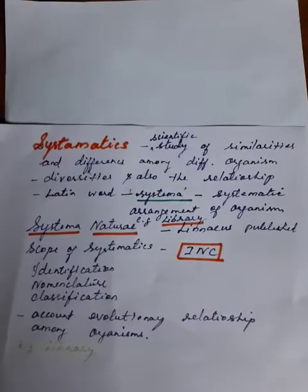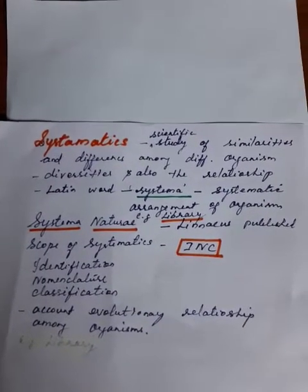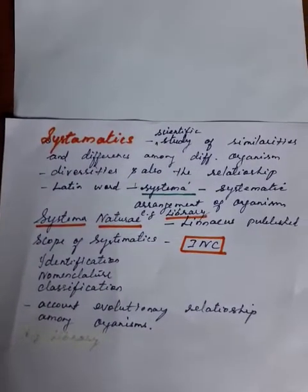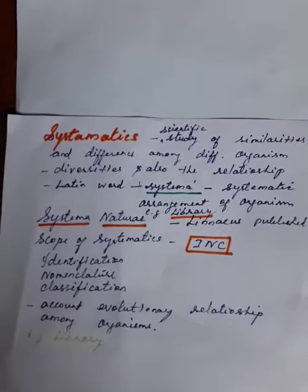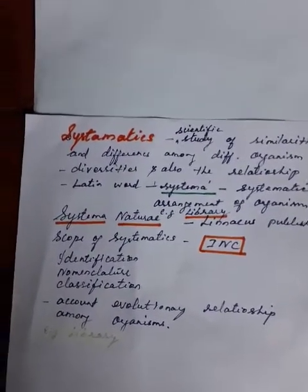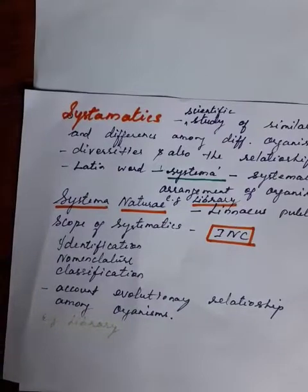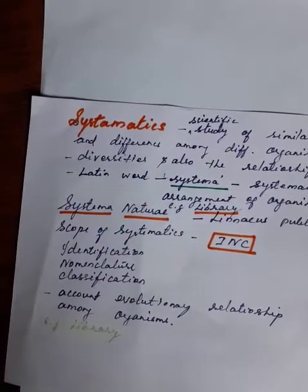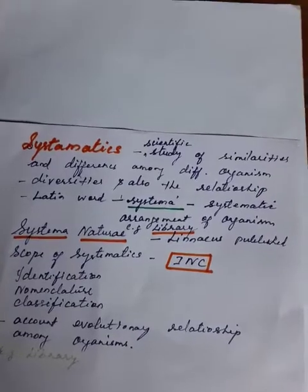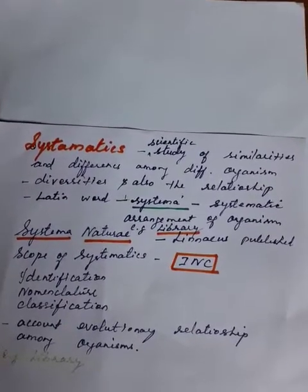Systematics comes from the Latin word systema, meaning systematic arrangement of organisms. You can take the example of a library — if books are not arranged and just dumped, you cannot find anything. If books related to zoology and insects are systematically arranged and labeled, you can find them easily. The book Systema Naturae was published by Linnaeus.